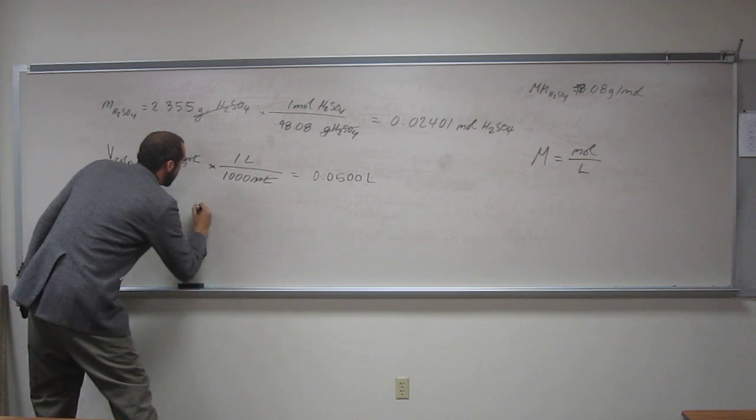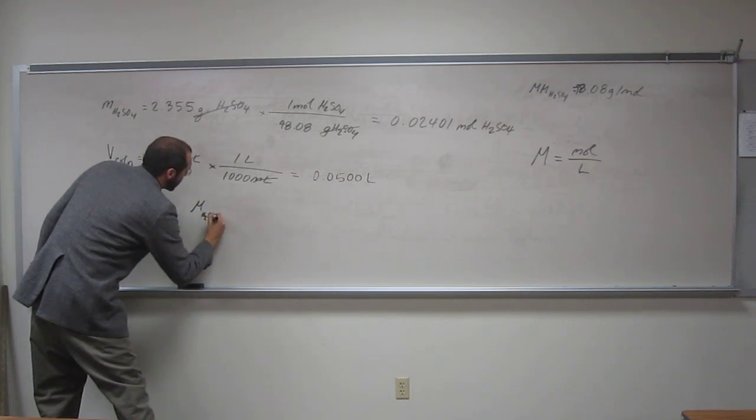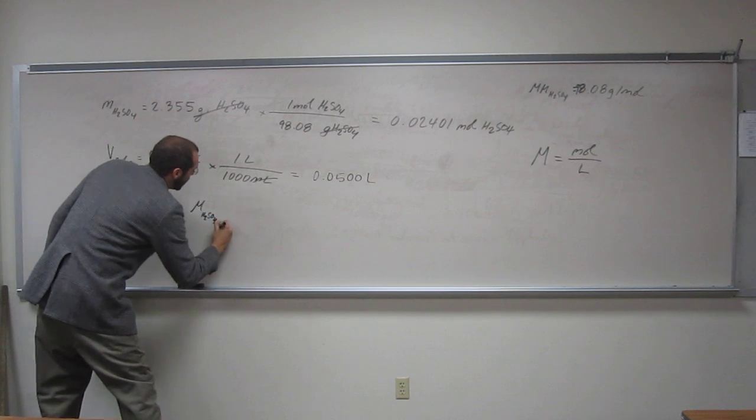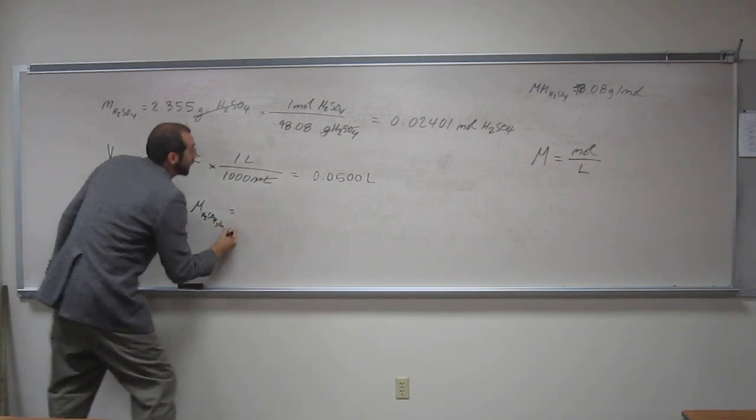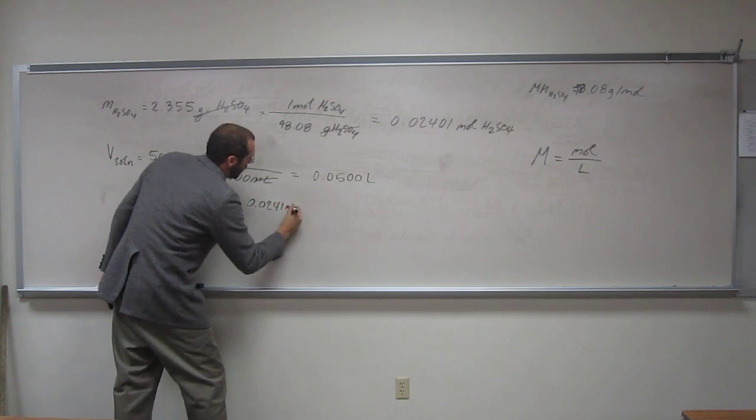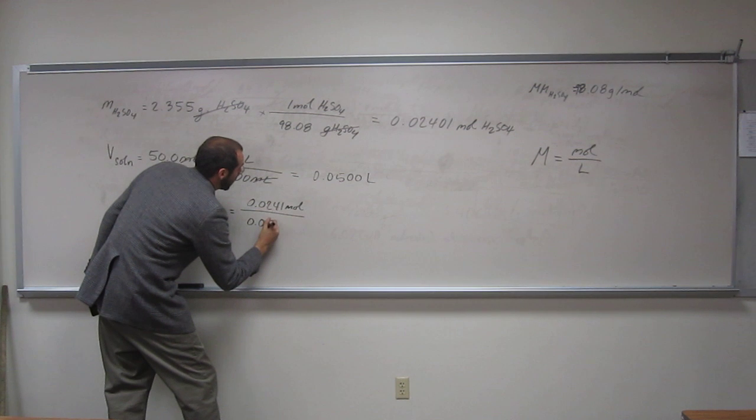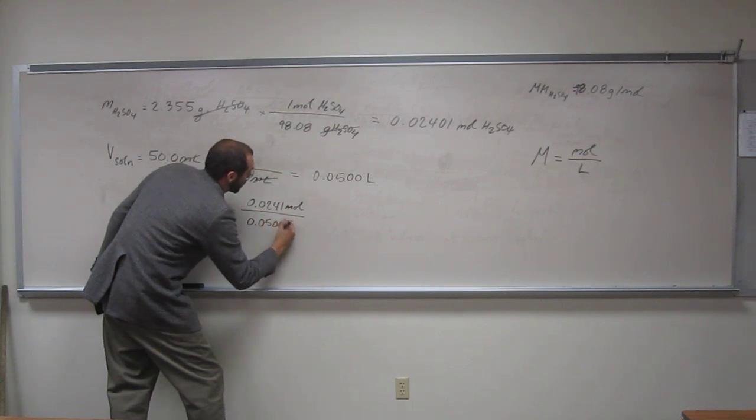So in this case, the molarity of your sulfuric acid solution is going to be 0.0241 moles per 0.0500 liters.